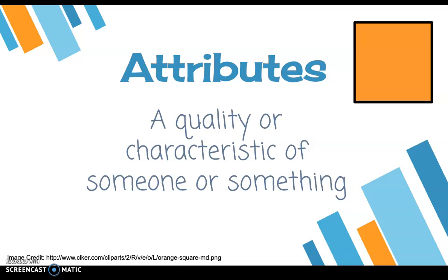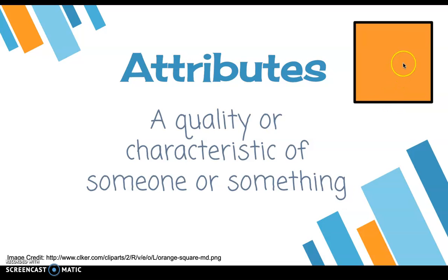For example, look at the square in the top right corner. An attribute of the square is that it is orange. Another attribute would be that it has four right angles. What's another attribute that you could name of this square?